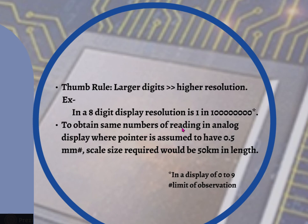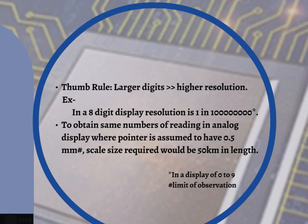To obtain the same number of readings — 1 in 10 to the power of 8 — in an analog display, which uses a needle that moves across the scale, we would assume a 0.5 mm resolution. This 0.5 mm is in fact the limit of observation for the human eye — we as humans cannot resolve beyond 0.5 mm with the bare eye. Therefore, the scale for an analog instrument with such high resolution would need to be 50 kilometers in length.